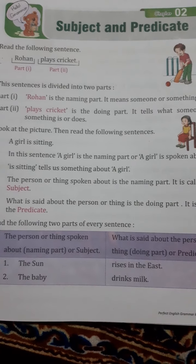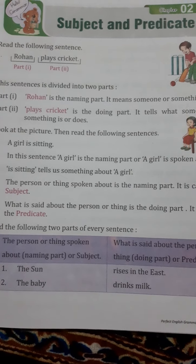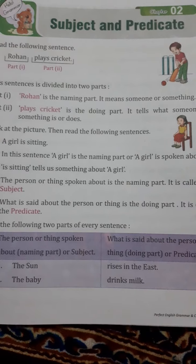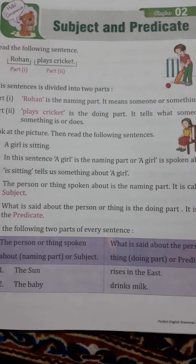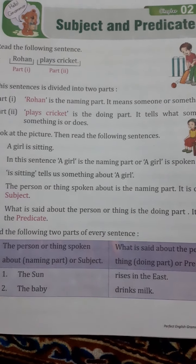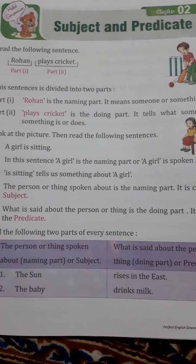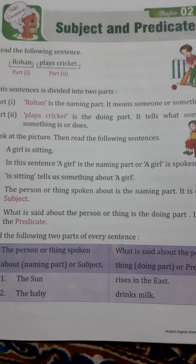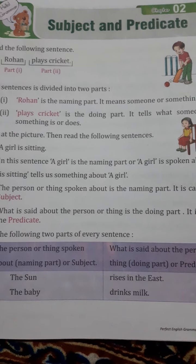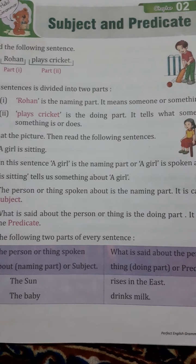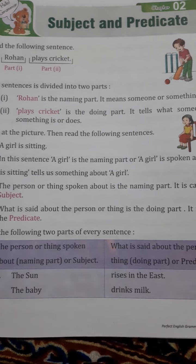My dear kids, very good morning to all. We are doing chapter 2 of English Grammar. We done chapter 1. I hope you all done your classwork and schoolwork. This is chapter 2, that is Subject and Predicate.